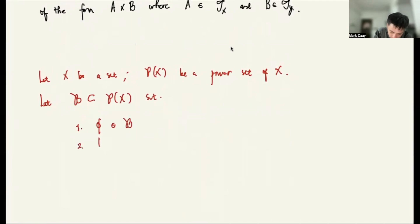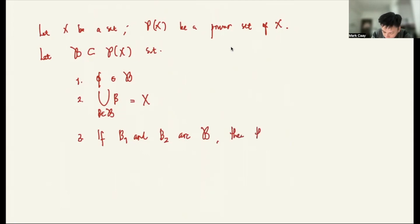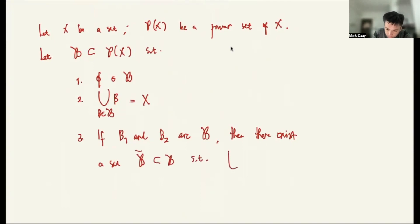Number two: the union of B, such that B is in script B, is equal to X. Number three: if B₁ and B₂ are in script B, then there exists a set — let's call it script B-bar — a subset of script B, such that the union of B which is in script B-bar is equal to B₁ ∩ B₂.